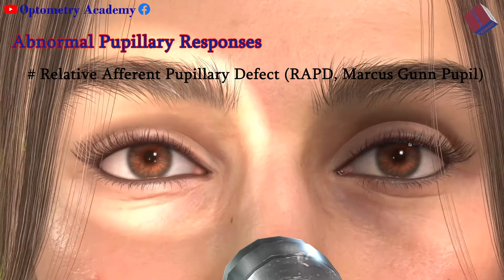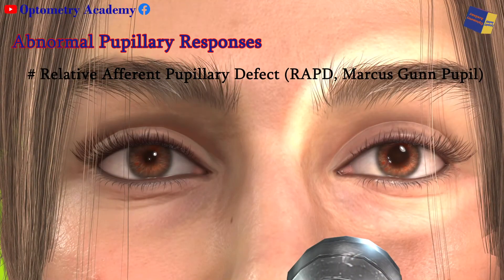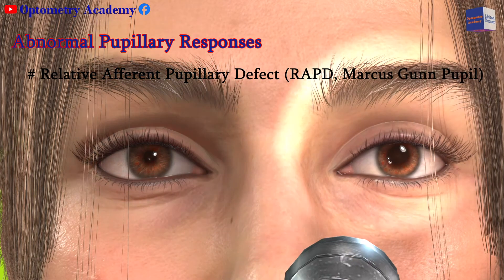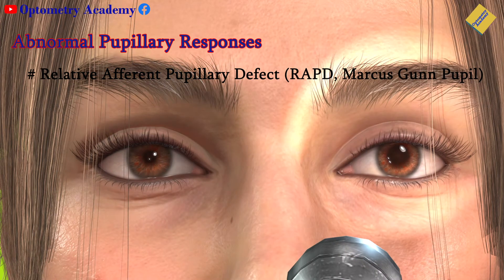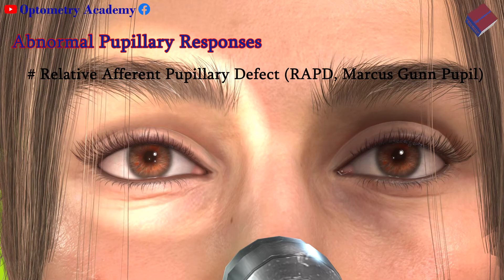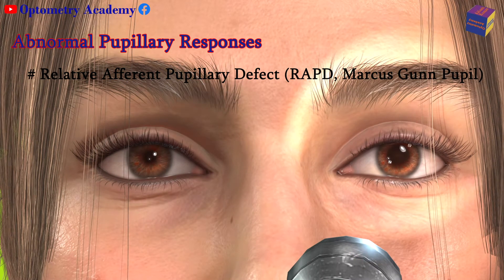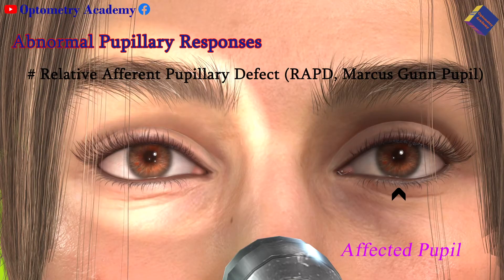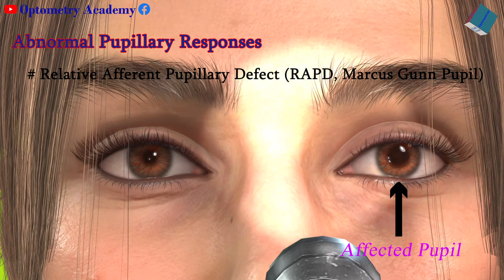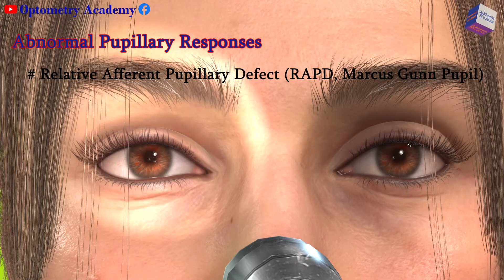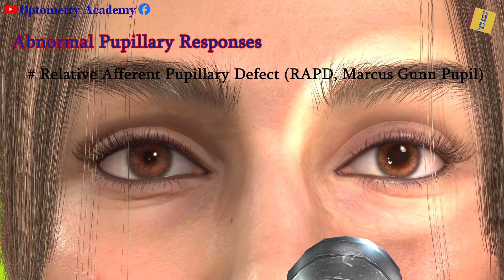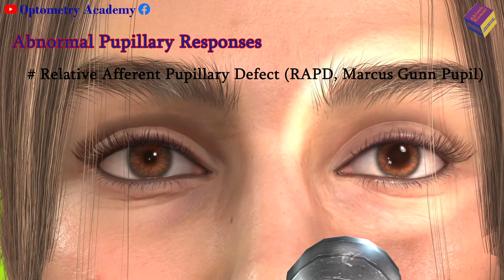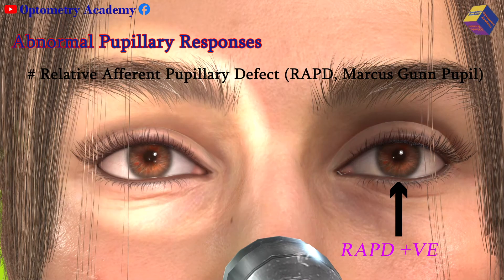Relative afferent pupillary defect (RAPD) is a defect in the direct response, due to damage in the optic nerve or severe retinal disease. It is important to differentiate whether a patient's decreased vision is from an ocular problem such as cataract or from a defect of the optic nerve. If an optic nerve lesion is present, the affected pupil will not constrict to light when light is shown in that pupil during the swinging flashlight test; however, it will constrict if light is shown in the other eye. The swinging flashlight test is helpful in separating these two etiologies, as only patients with optic nerve damage will have a positive RAPD.